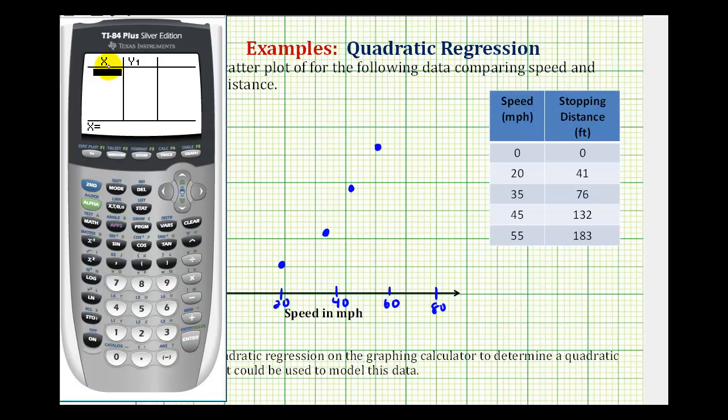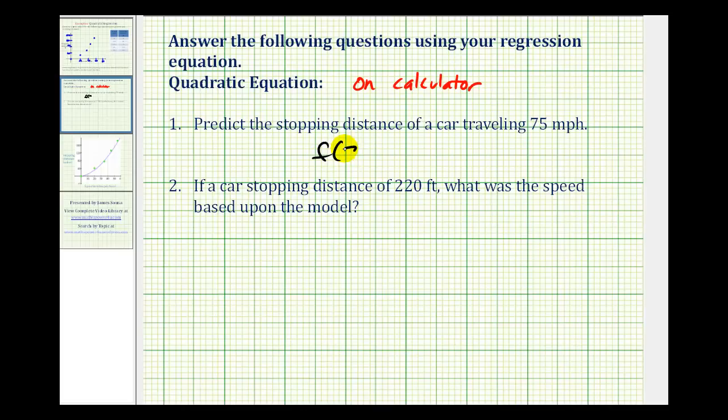And we want to know what the stopping distance would be when x is 75. So I'll press 75 and then enter. So it's going to be approximately 318.2 feet. So f(75) is approximately equal to 318.2 feet. And I am assuming they want us to round to the tenths.